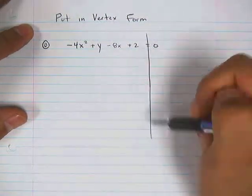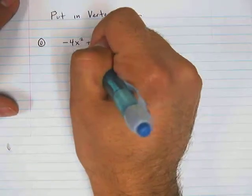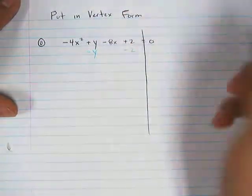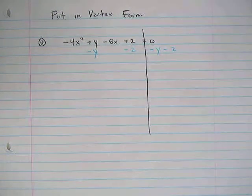To start shortcutting this so we don't have to work as hard or as long, what I'm going to do is subtract y and subtract 2 at the same time. That way you can get rid of both those things in one step. You don't have to rewrite the problem.